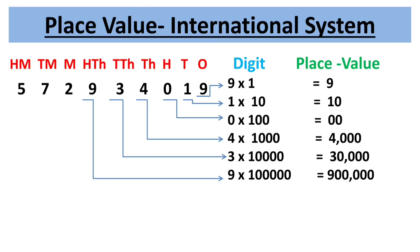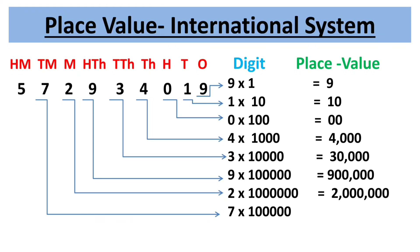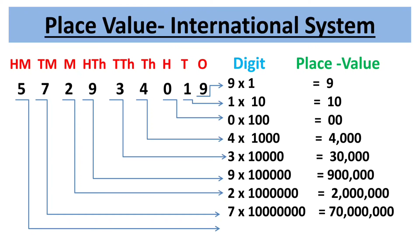The third period is millions, consisting of three place values: millions, ten-millions, and hundred-millions. Place value of 2 is 2 × 1,000,000 = 2,000,000. Place value of 7 is 7 × 10,000,000 = 70,000,000. Place value of 5 is 5 × 100,000,000 = 500,000,000.